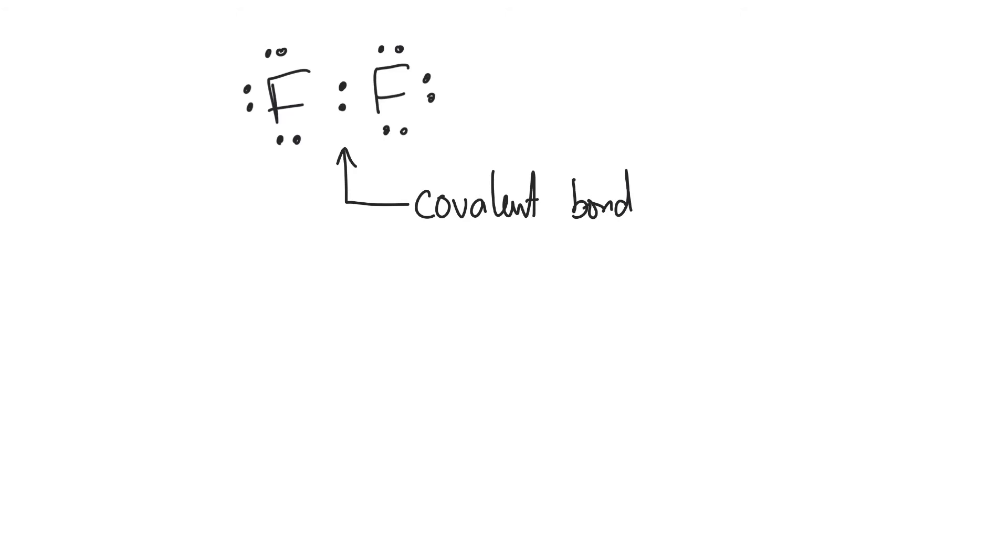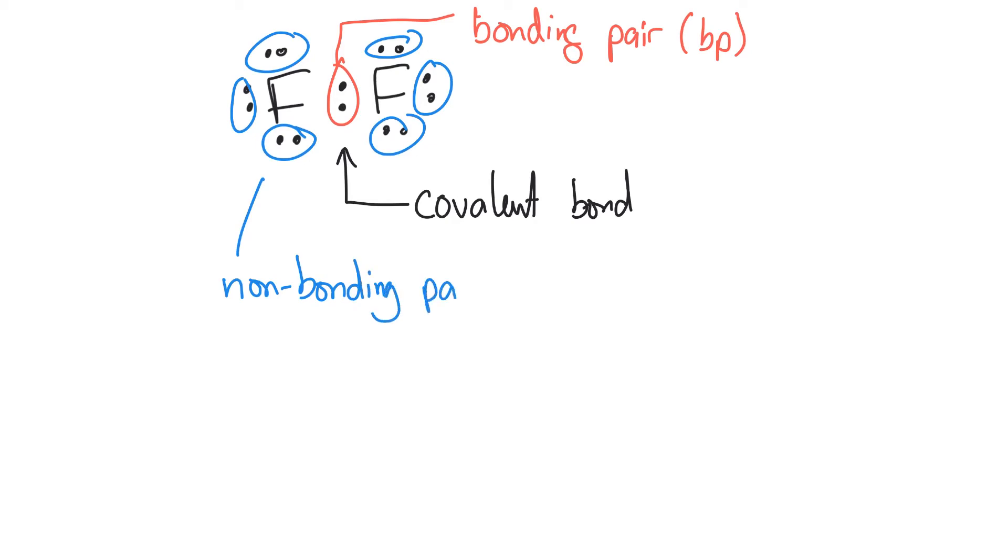We've got some language here. We refer to this electron pair here as a bonding pair, or BP for short. And these electrons that are not gluing the atoms together, these are our non-bonding pairs. We can write that as NBP for short, although they're honestly mostly called lone pairs, and that's LP for short.